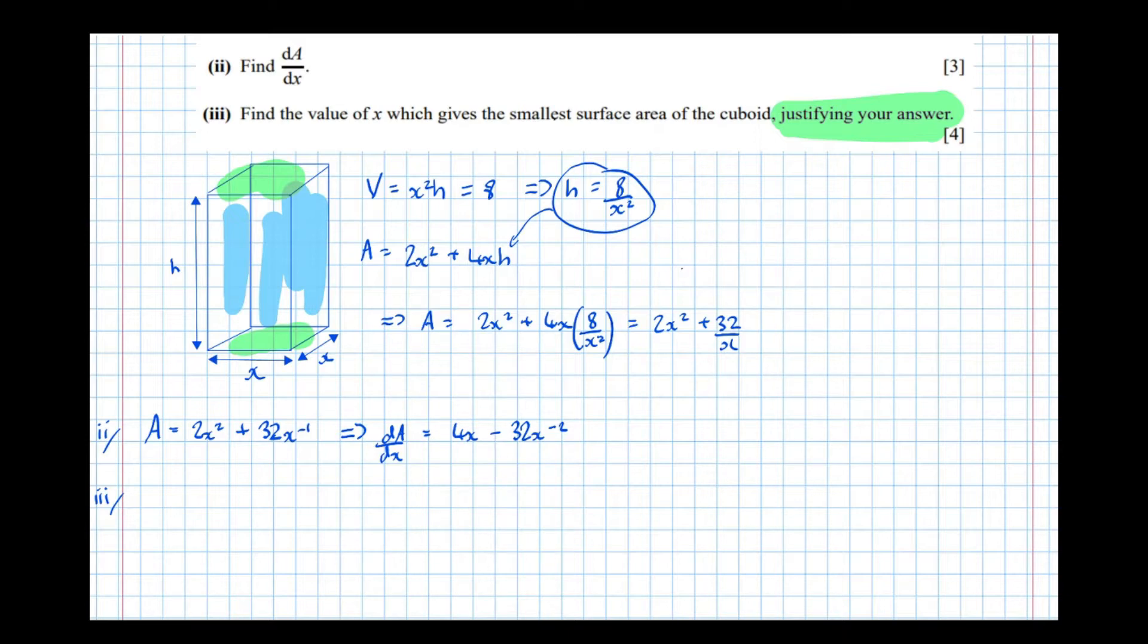Well, to find the minimum on such a curve, we need to differentiate, which we've already done, then set the differential to 0. Just like finding the stationary point. This is finding the stationary point, but in the context of a practical situation. So we get 4x minus 32x to the minus 2 equals 0, which implies that 32x to the minus 2 equals 4x.